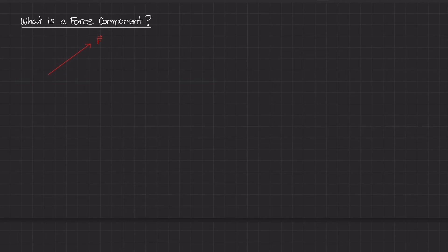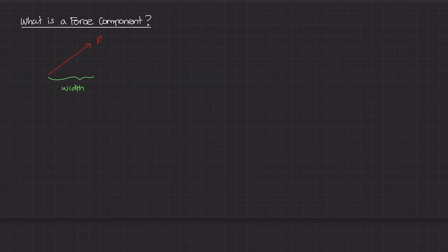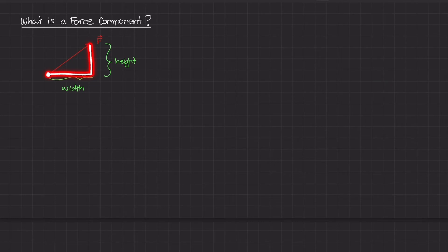Here on the screen, I've drawn this force F — just some arbitrary force labeled F. If you look at this closely, you can intuitively tell that this force vector has a certain width and it also has a certain height. If I started at the tail of this vector, I would have to go some distance in the horizontal direction, and then go up in the vertical direction to get to the tip of F.